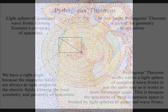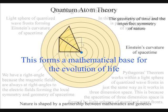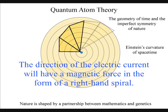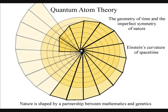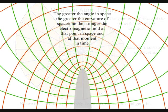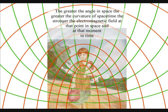The magnetic fields are always at right angles to the electric fields, forming the local spacetime symmetry and geometry that will spiral out, creating the visual and mathematical patterns of our universe. The greater the angle in space, the greater the curvature of spacetime, the stronger the electromagnetic field, at that point in space, and at that moment in time.